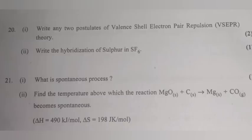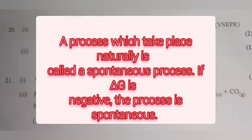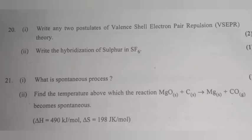Question 21.1: What is a spontaneous process? Answer: A process which takes place naturally is called a spontaneous process. If delta G is negative, the process is spontaneous.